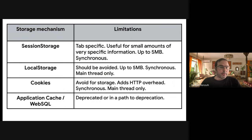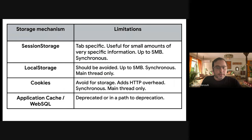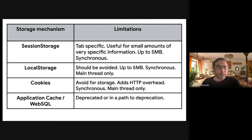Local storage should also be avoided. It's quite limited — up to five megabytes. It's synchronous and can only be accessed in the main thread. Cookies have a lot of useful use cases, like session management. But for storage, they might not be the most convenient mechanism, especially because every time you send a request, you have to carry all the cookies in that HTTP request, which adds a lot of overhead. Cookies are also synchronous and available in the main thread only. Finally, there are technologies that have been deprecated, like the application cache, or are on the path of deprecation, like Web SQL, so these should be avoided as well.